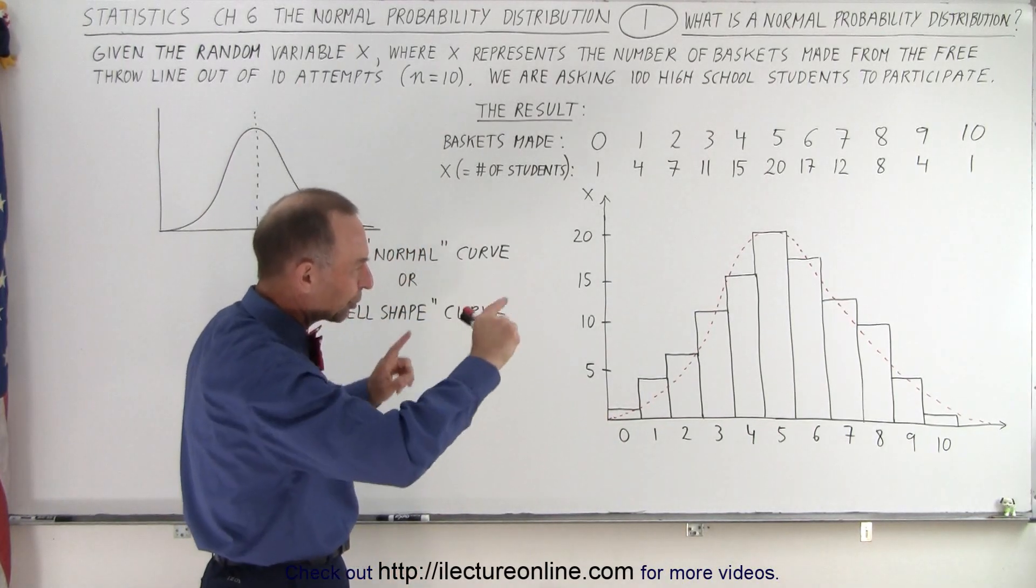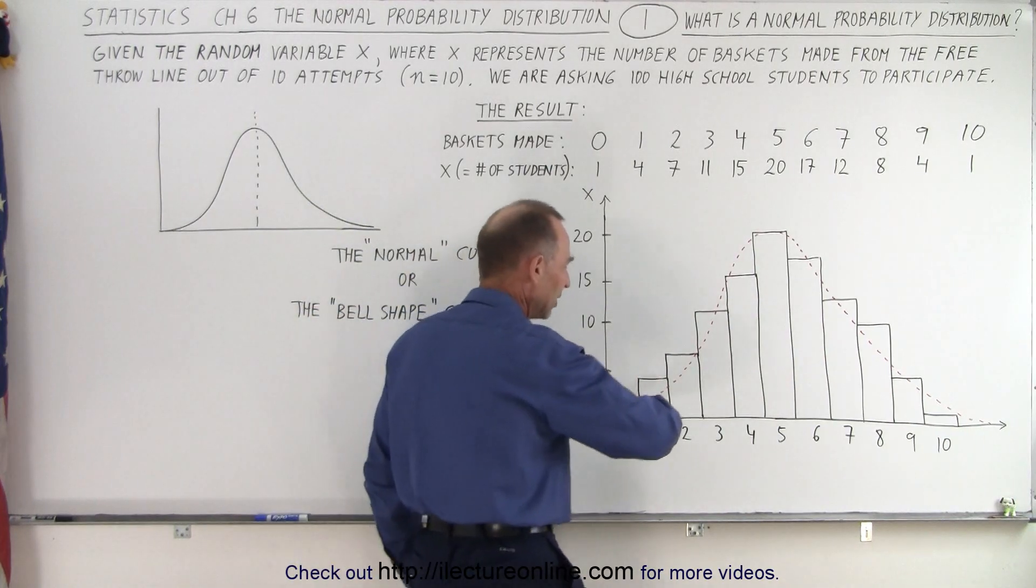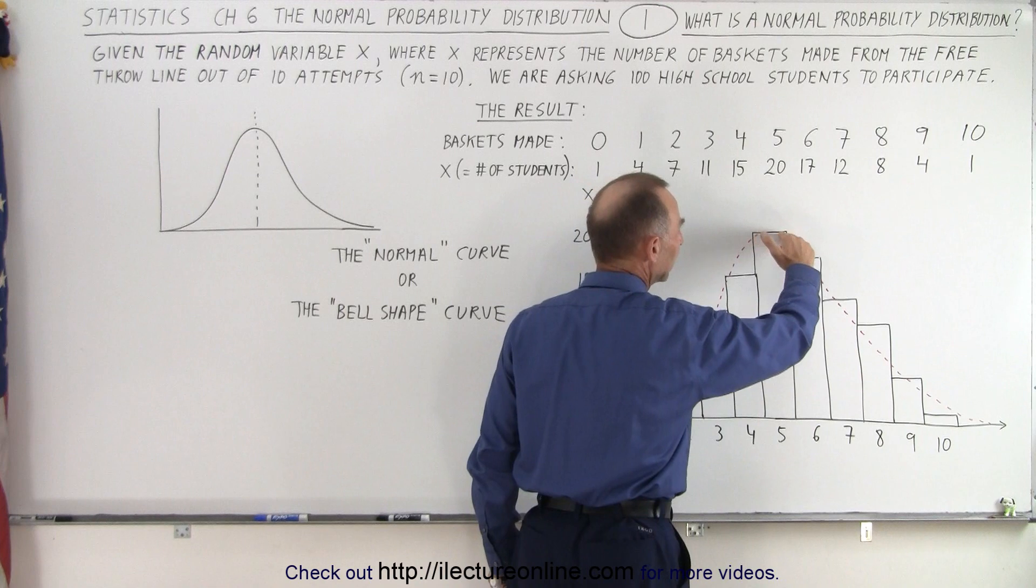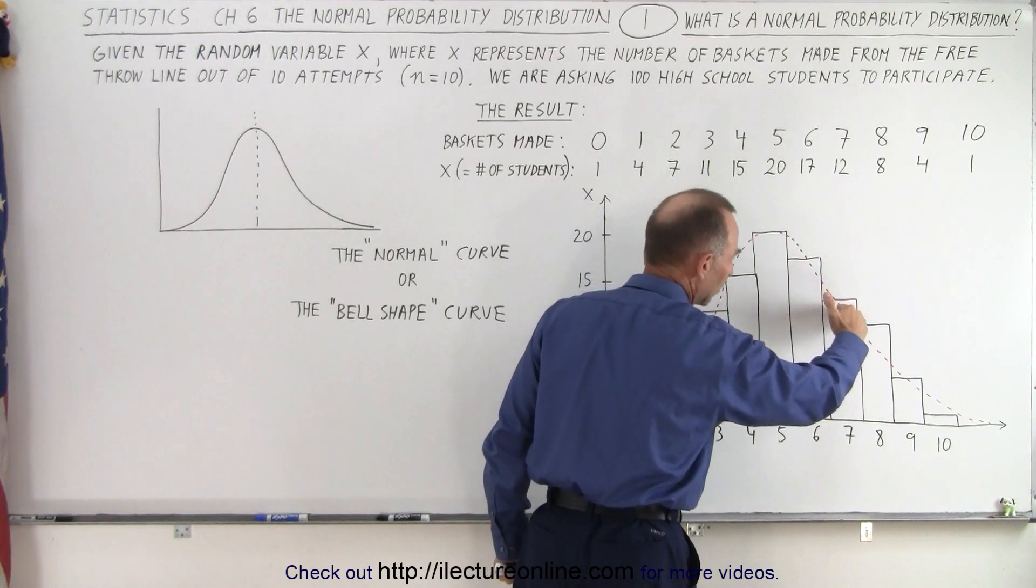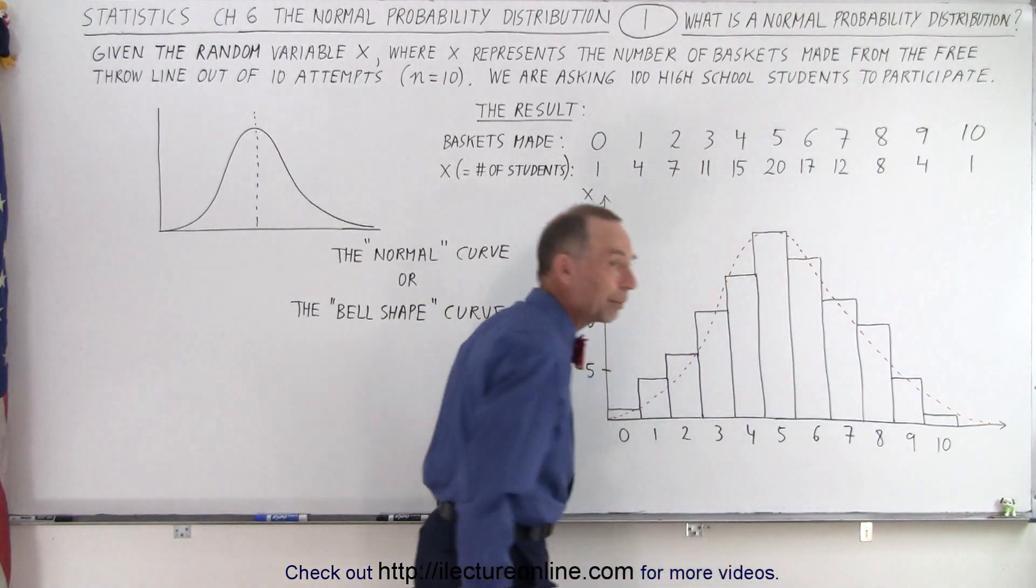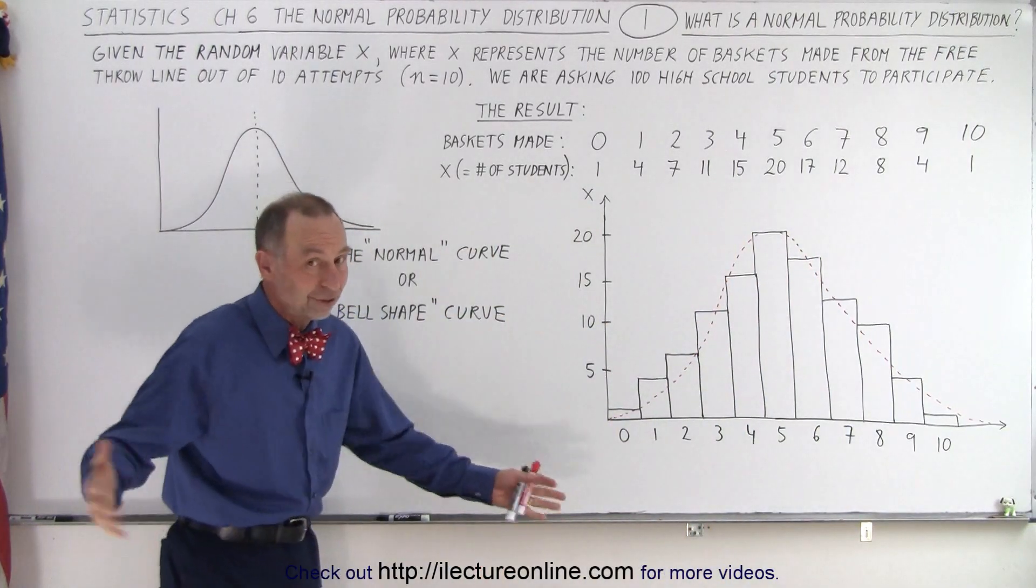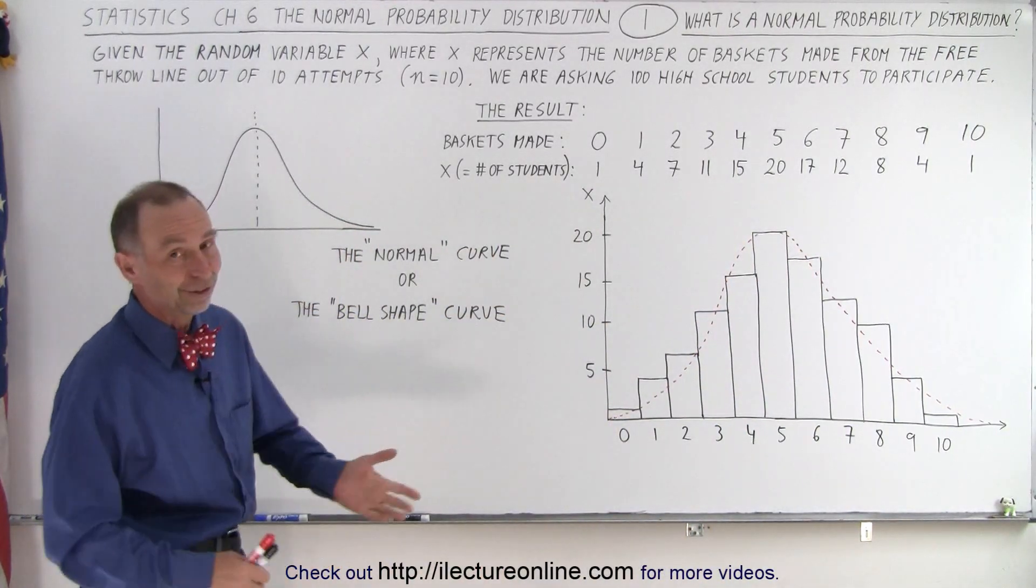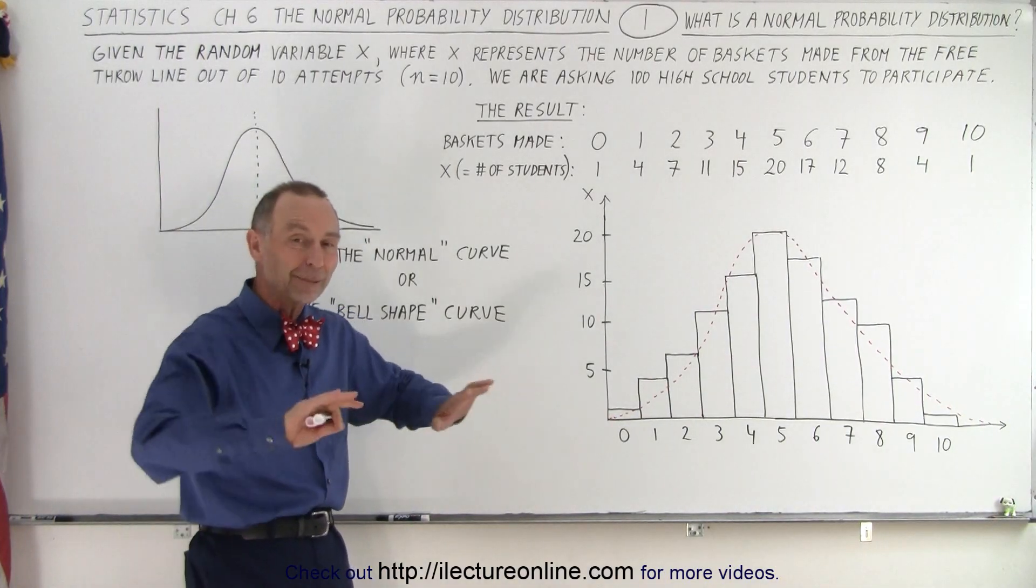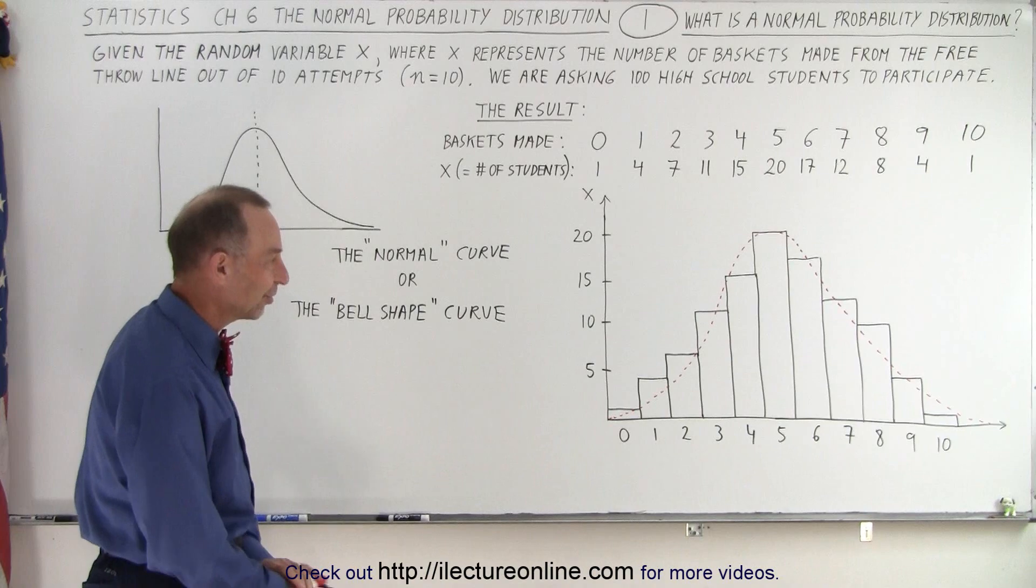So you can see that particular curve where we have this increase, faster increase, slower increase, maximum probability, decrease, faster decrease, slower decrease, and eventually kind of goes off to 0 probability. Obviously, the 0 probability you'll make 11 baskets if you only get 10 tries. And yes, you cannot make negative baskets. So that probability is, of course, 0.